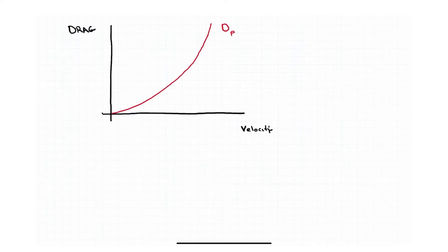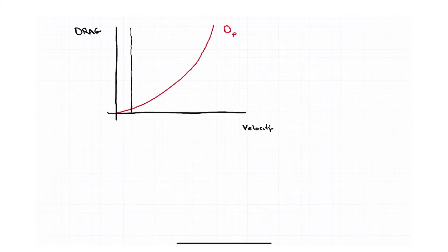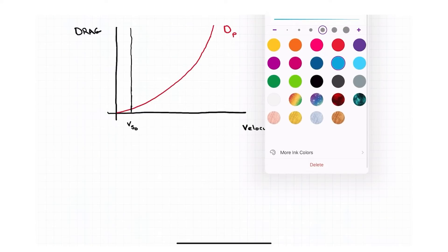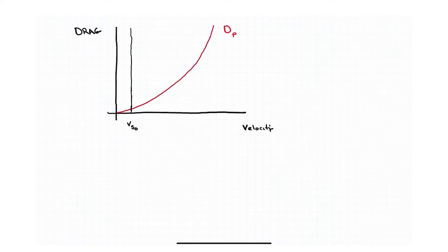Induced drag doesn't take hold or begin until we have started the production of lift. So we typically don't see induced drag until we've gotten faster than the stall speed with gear and flaps out. Therefore, we don't start drawing the induced drag side of it until we have rotated and get positive lift out of our wing.